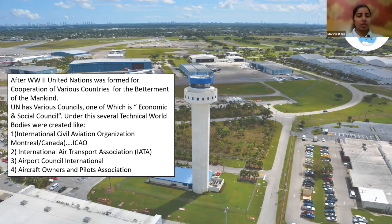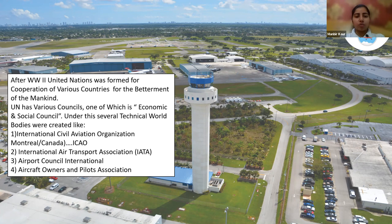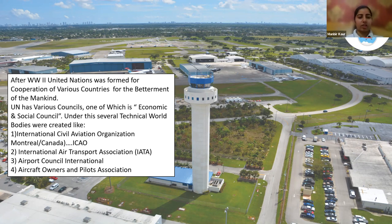A few major international bodies include: the International Civil Aviation Organization (ICAO), the International Air Transport Association (IATA), Airports Council International (ACI), and the Aircraft Owners and Pilot Association (AOPA). These are the major international organizations that operate and handle all the rules and regulations on any airport or airline.